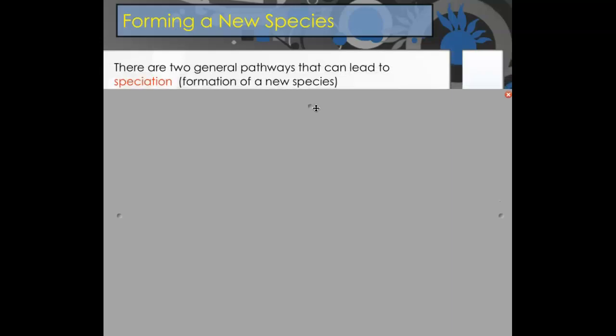In this video I'm going to quickly explain how a new species can be formed and a couple of different theories on how that happens. When we form a new species it is called speciation, and there are two different ways that this can happen that we're going to talk about in this video.